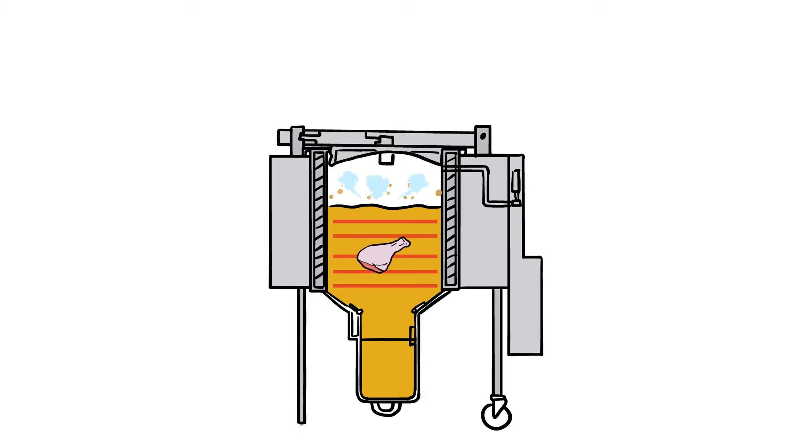While steam is normally 212 degrees, a pressure fryer allows it to get around 250 degrees, which in turn cooks the chicken faster.